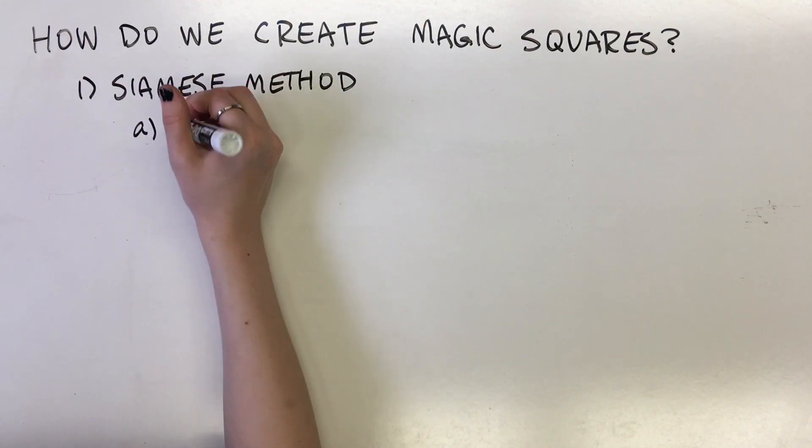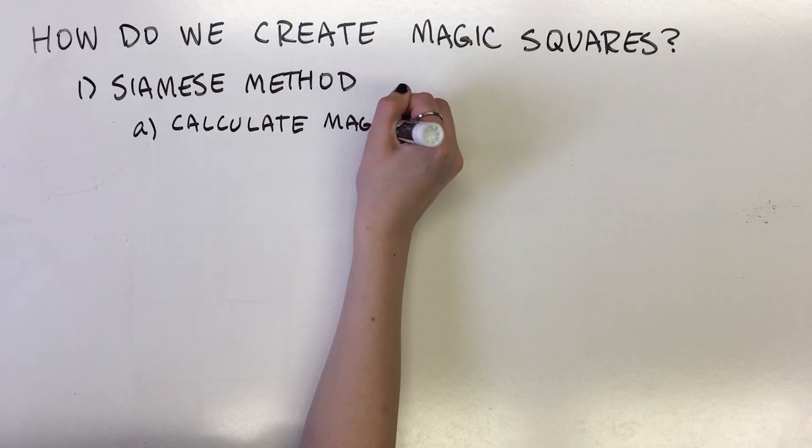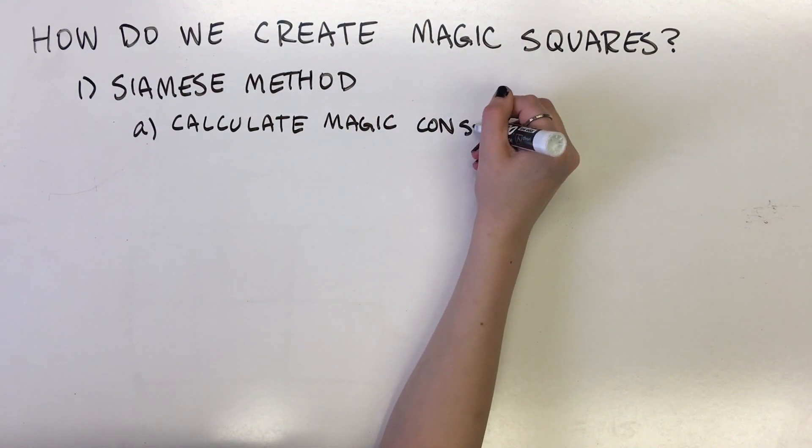First, we calculate the magic constant using the formula n times the quantity n² + 1 over 2, where n is the number of rows and columns.